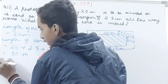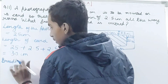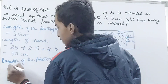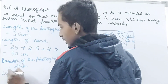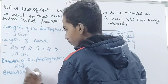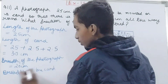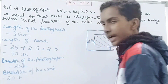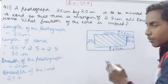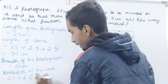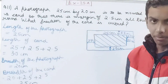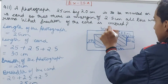The breadth of the photograph is 20 centimeters. Now for the breadth of the card: we take 20 and add the margins — 2.5 here and 2.5 here — so 20 plus 2.5 plus 2.5 equals 25 centimeters. So the entire length of the card is 30 centimeters and the entire breadth is 25 centimeters.